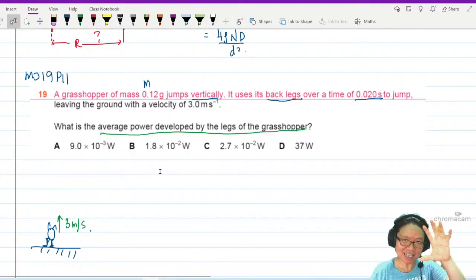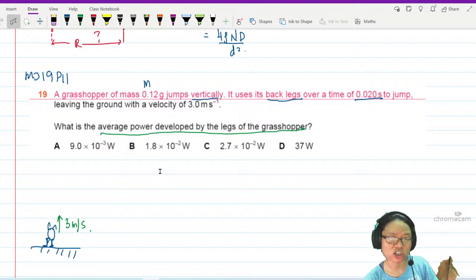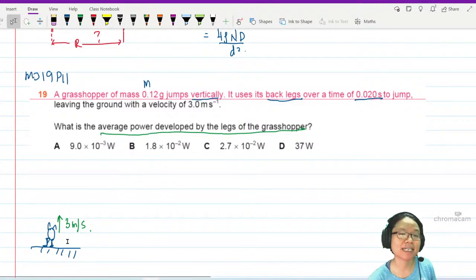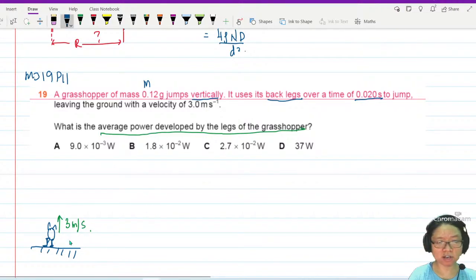When it bends the back leg, there will be potential energy stored within the muscles - ATP for those who do bio. Some ATP magic is happening so that energy is converted to KE.